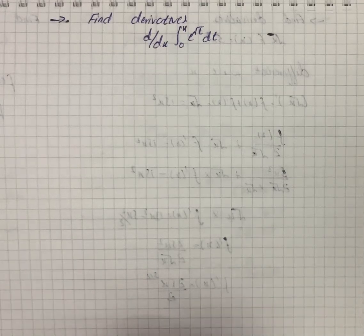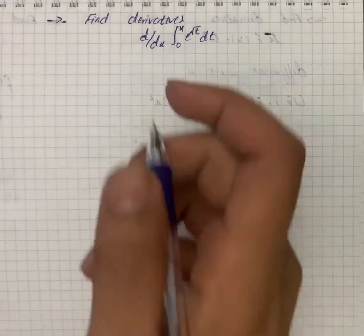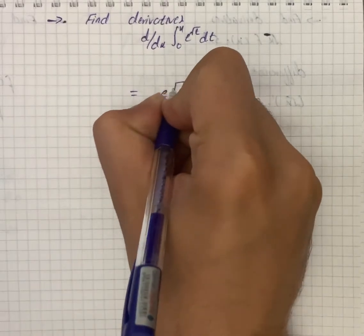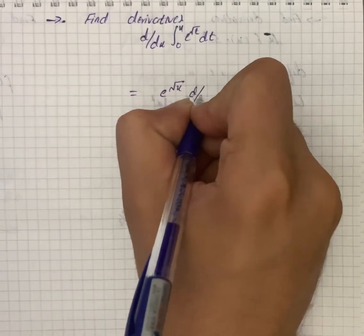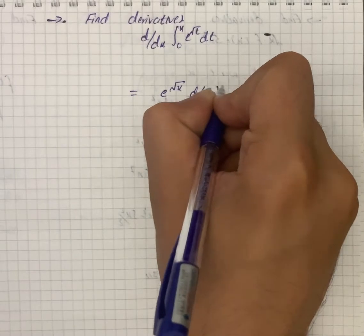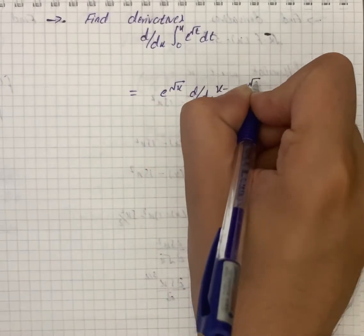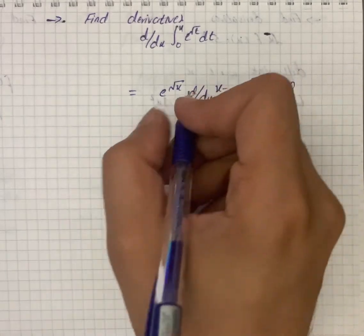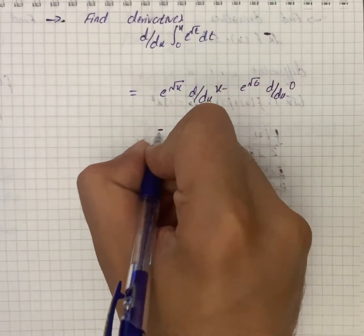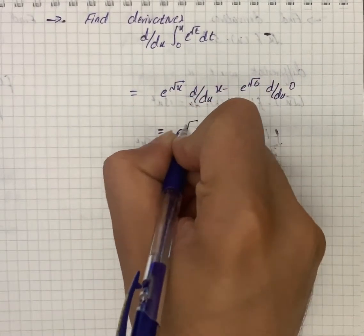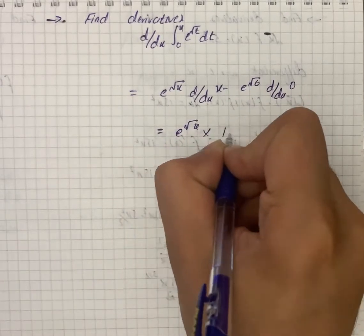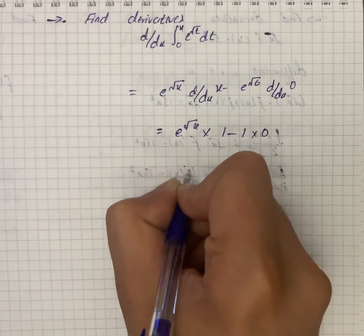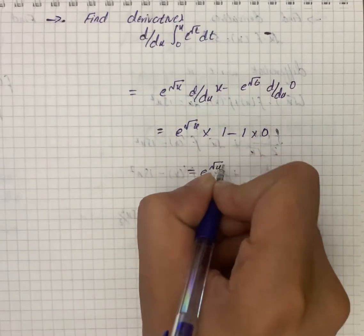Here we have to find derivatives. So by using the theorem, we have e raised to power √x into d/dx of x, minus e raised to power √0 into d/dx of 0. We can write that e raised to √x multiplied by 1, minus 1 multiplied by 0, which gives us e raised to power √x.